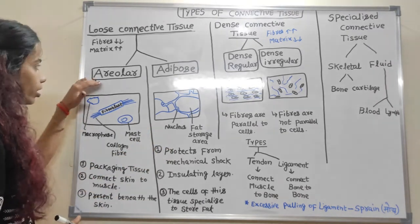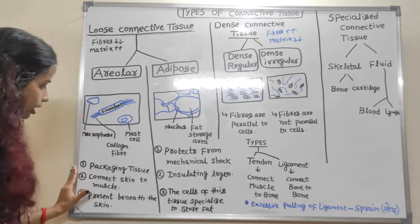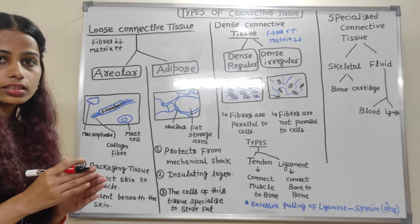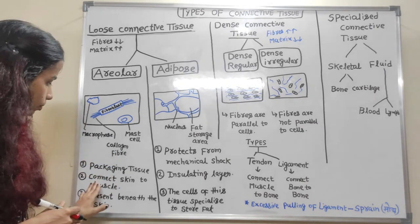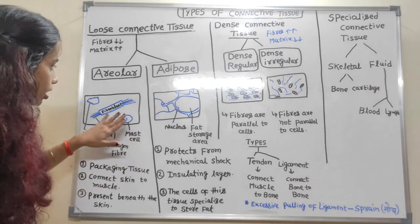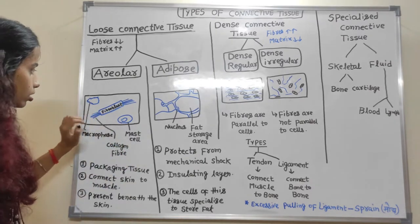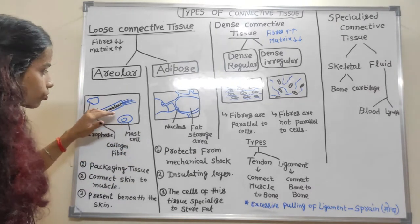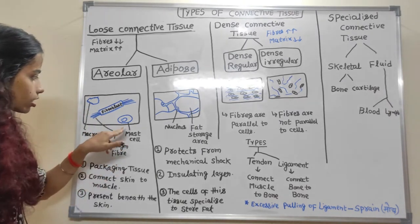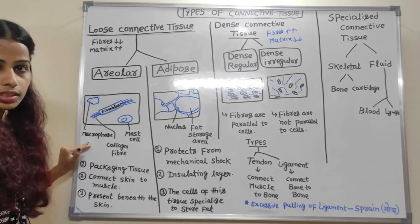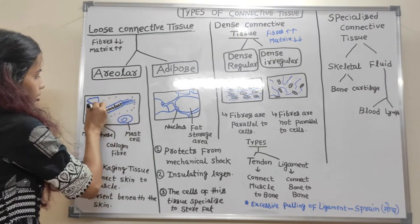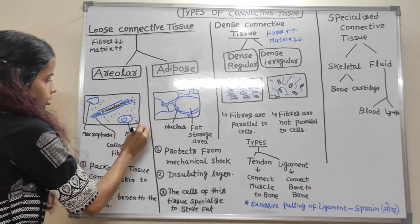What is the function of areolar loose connective tissue? It works as a packaging tissue, meaning it packages and connects skin to muscle. It is present beneath the skin. In the structure, fibroblasts are present — fibroblasts create collagen fibers. There are also mast cells, macrophages, and matrix present in the spaces.